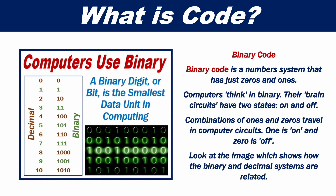Binary code is a number system that has just zeros and ones. Computers think in binary. Their brain circuits have two states: on and off. Combinations of ones and zeros travel in computer circuits — one is on and zero is off.